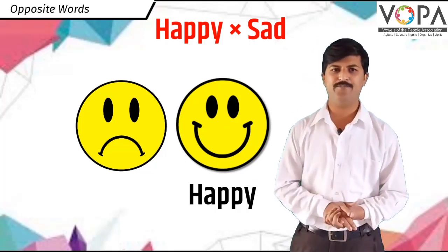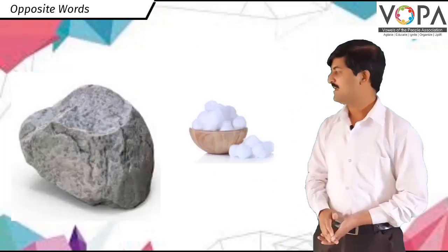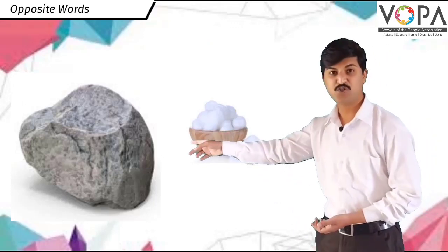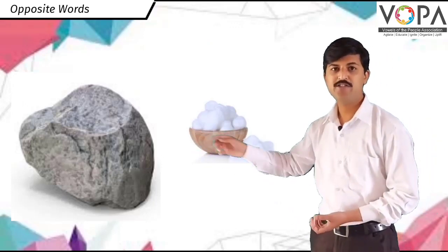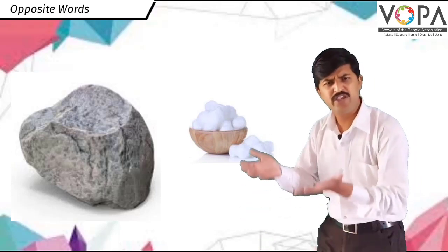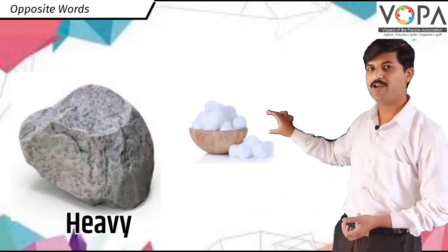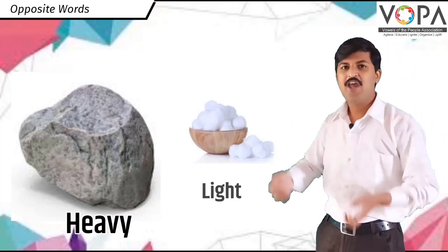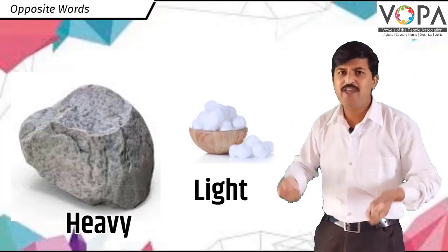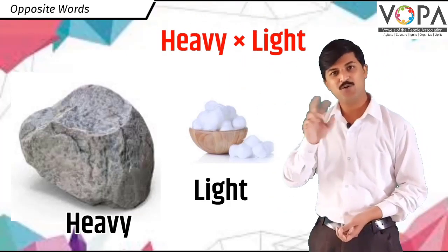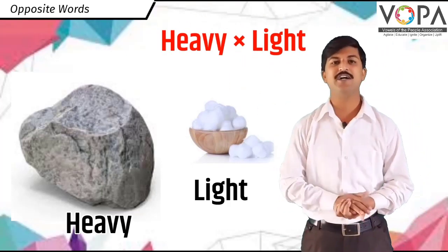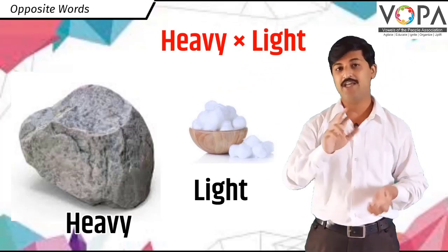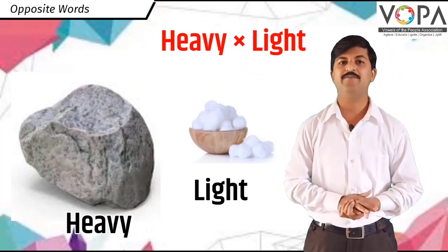Let's look at another example. See these two pictures. There is a stone — stone is heavy. And here is cotton — cotton is light. Heavy and light are two opposite words. In Marathi: zod ani halka — he dun ulat artha che shabda ahet.